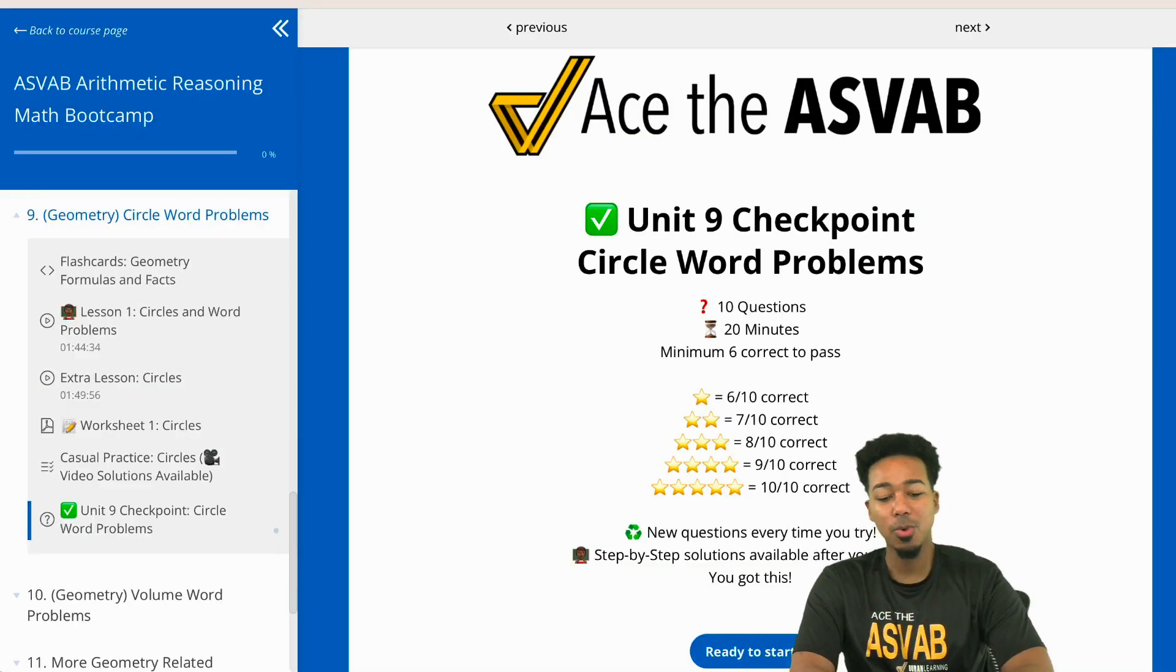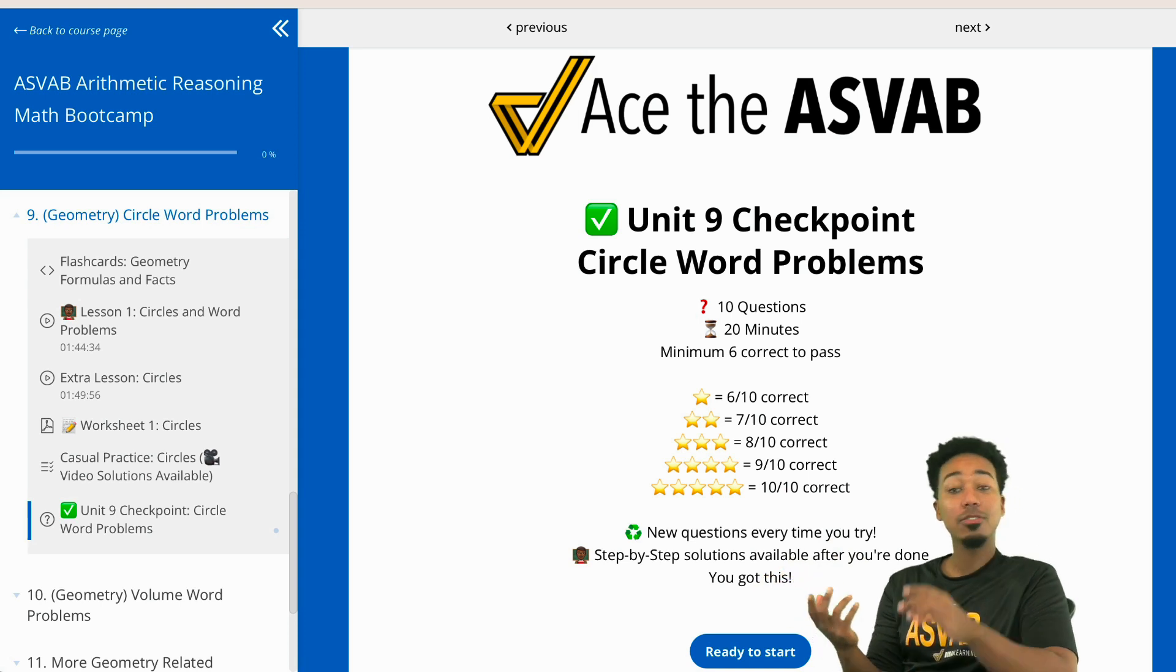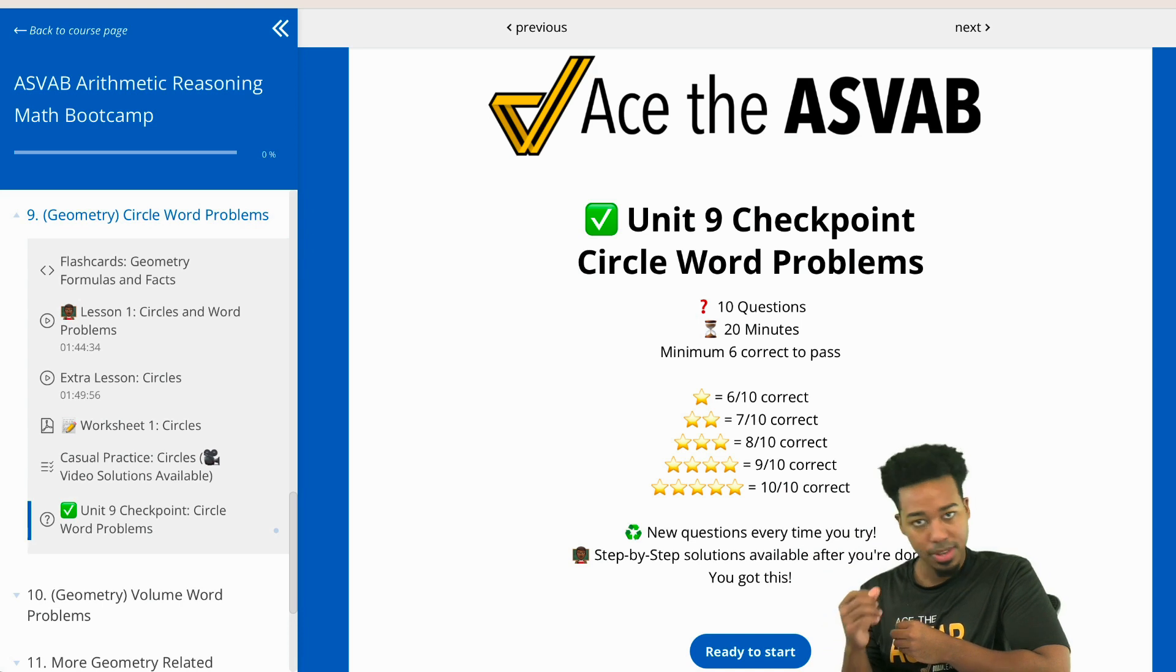So you are now going to have access to your unit nine circles, your checkpoint here, your unit checkpoint. And so pretty much what this is, is this. You're going to have questions that have you calculate circumference, area, finding radius, diameter, looking at different word problems, revolutions of a wheel, all of these different types of problems tested on you randomly. That way you can guarantee that when you see circles on the ASVAB, you are good.